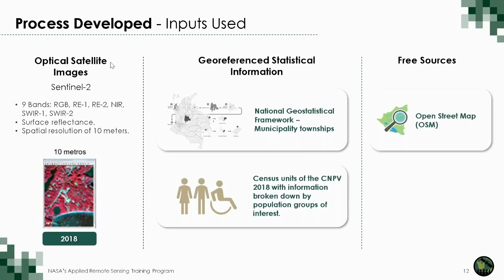We also use information from the national population census conducted in 2018. This census was georeferenced, so it is an important source of information to identify where people are located, disaggregated by different groups of interest — meaning women, children, and persons with disabilities. Finally, we also use free sources of information that help improve the identification of public space and roads.